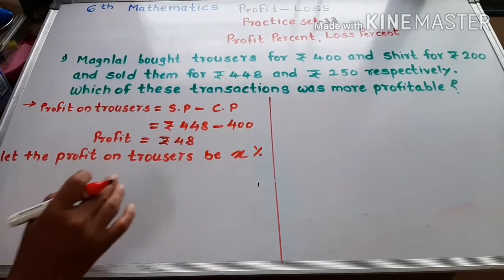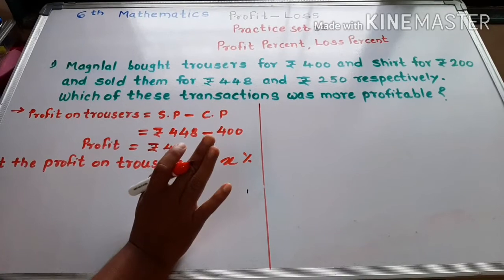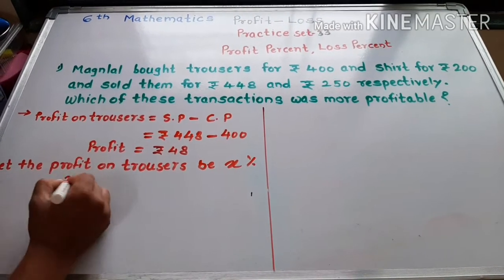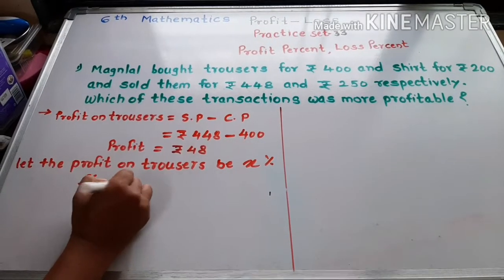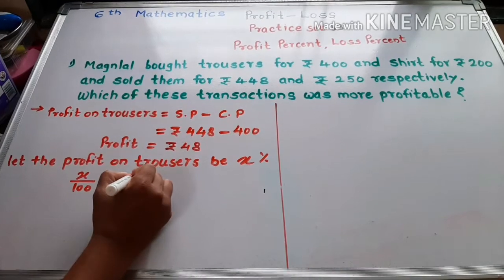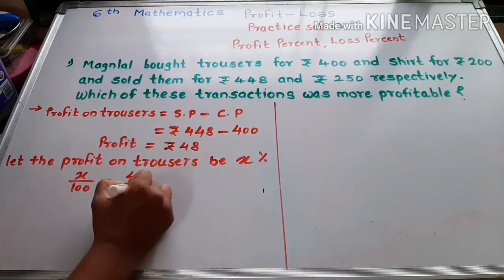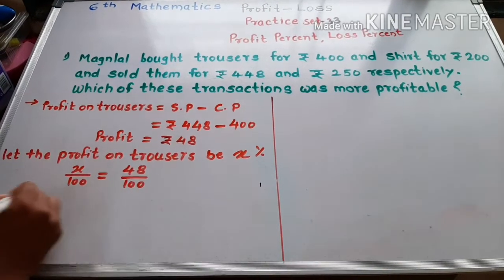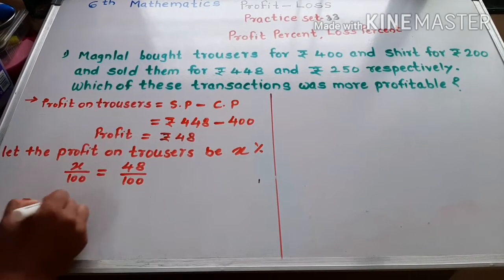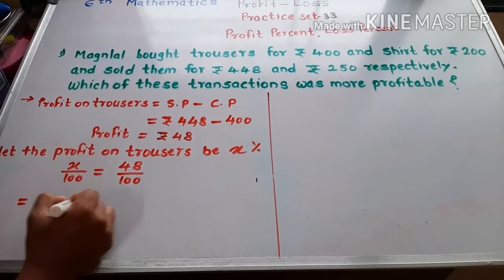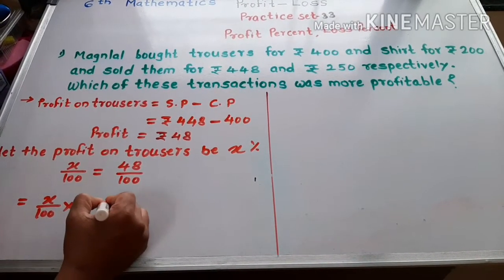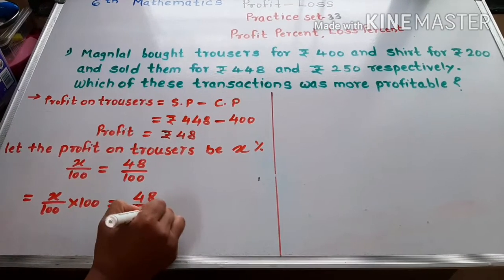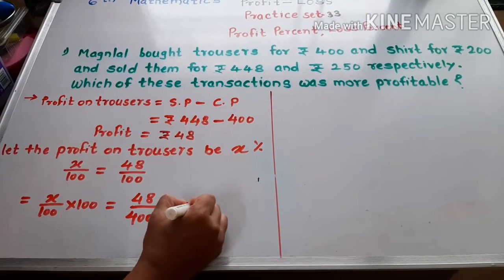We can write X divided by 100 is equal to 48 divided by 400. We write as X upon 100 multiple by 100 is equal to 48 upon 400 multiple by 100.